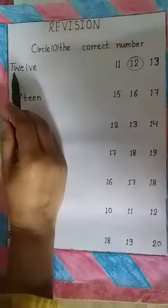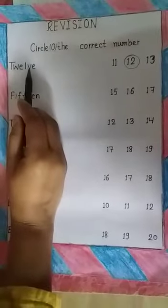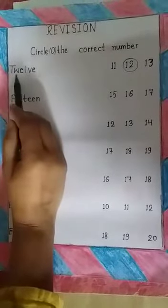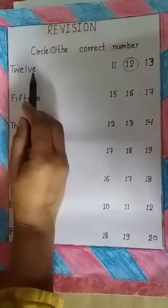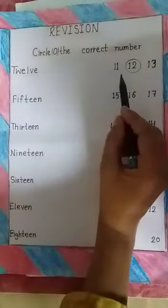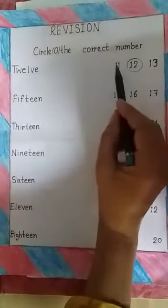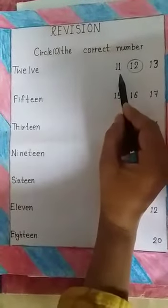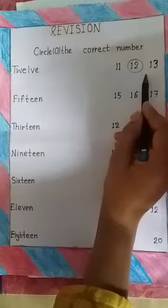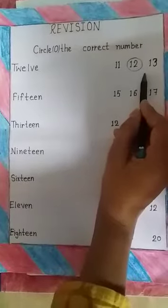For example, T, W, E, L, V, E — twelve. 12 is the correct number. So we will circle 12. Okay?